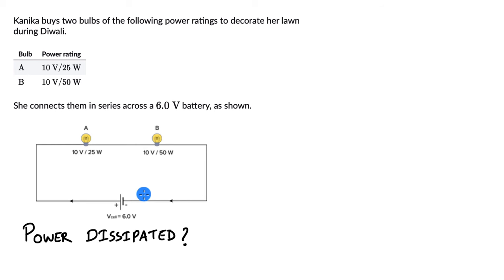We need to figure out the power dissipated. Since they are connected in series, one thing that we can be sure of is that the same current will pass through each of the bulb. The current I will pass through A and the current I will pass through B. If we were able to figure out this current, then maybe we can figure out the power dissipated. What else do we know? We know the power rating of A and B.